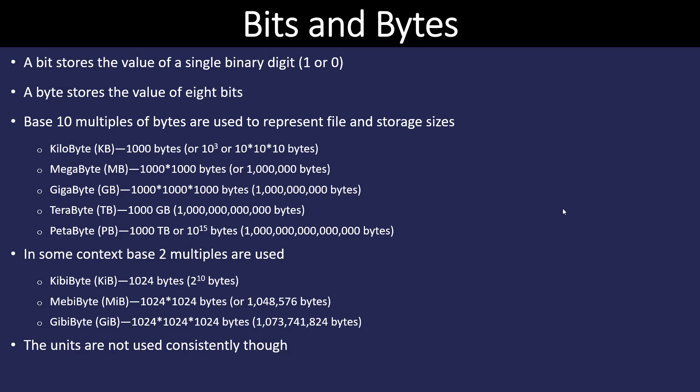We use a base 10 multiple of bytes to represent different sizes of files and storage. We've seen kilobyte, megabyte, gigabyte, terabyte, petabyte as representations of storage sizes. But the reality is that our storage, our hard drives, our solid state drives are actually stored in base 2 because everything is binary. While we talk about a kilobyte, if we bought something that was a kilobyte, it would actually be 1,024 or 2 to the 10th. So we have a mismatch in how we describe storage and sizes.